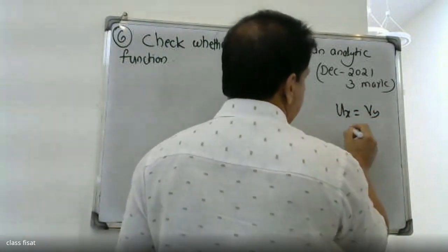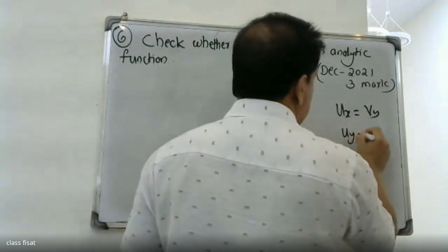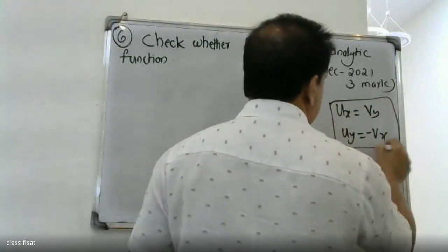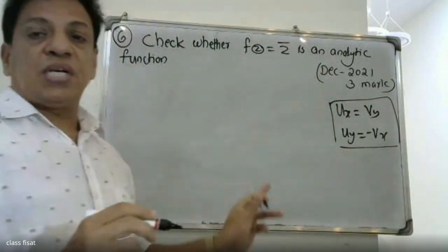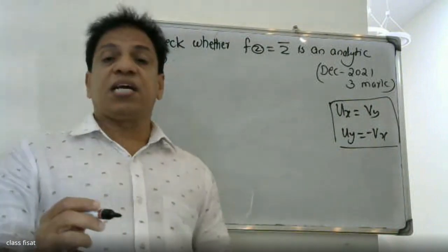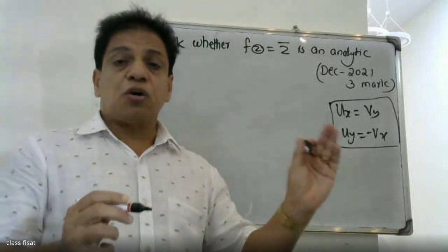Then uy is equal to minus vx. These are the Cauchy-Riemann equations in complex function theory. They describe variations in the function. For a complex function, we have a real part and imaginary part.